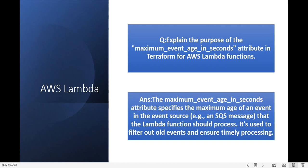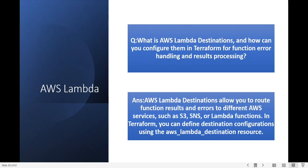Next question: what is the AWS Lambda destination and how can you configure Terraform for function error handling and result processing? AWS Lambda destinations allow you to route function results and errors to different AWS services like S3, SNS, or other Lambda functions. In Terraform you can define the destination configuration using the aws_lambda_function_event_invoke_config resource.